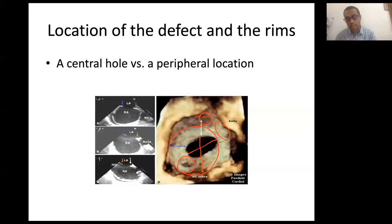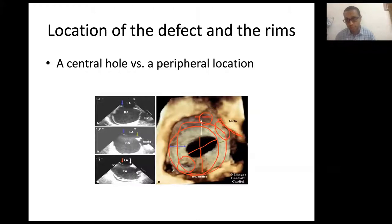Central versus peripheral location is very important. The retro-aortic rim is absent in about 40 to 50% of patients in all published series including ours. A large defect will take up the entirety of the atrial septum, leading to deficient anterior margins as well as deficient posterior margins, making the intervention more and more challenging.